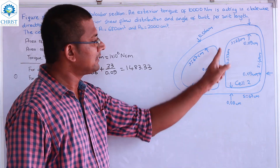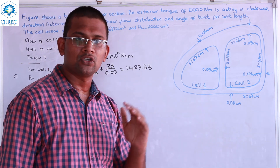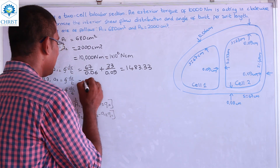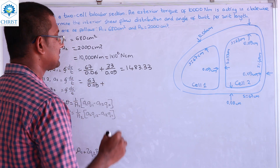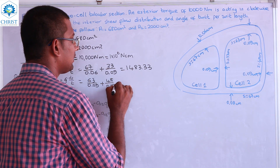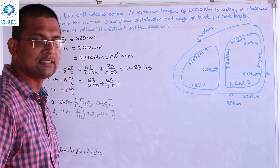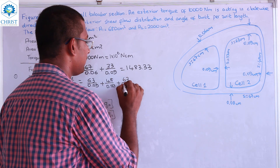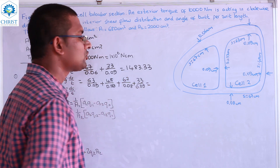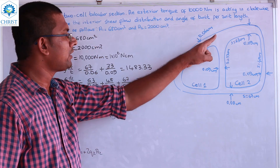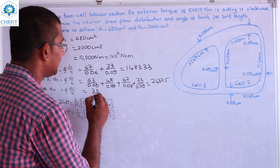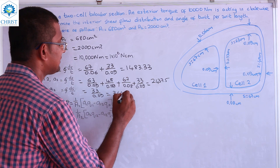For cell 2, there are four boundaries. A2 equals 63/0.09 plus 48/0.09 plus 67/0.08 plus 33/0.09, giving A2 equal to 2437.5. The shared web term A12 equals 33 divided by 0.09, which is 366.67.